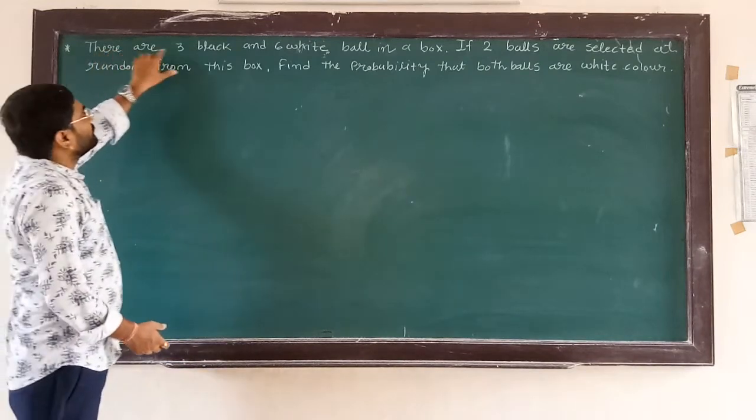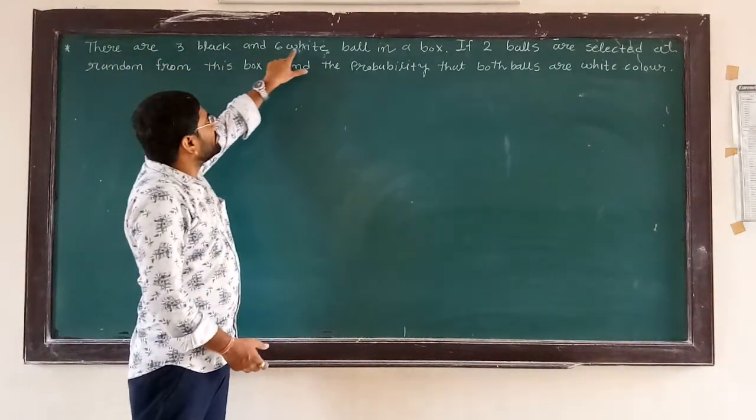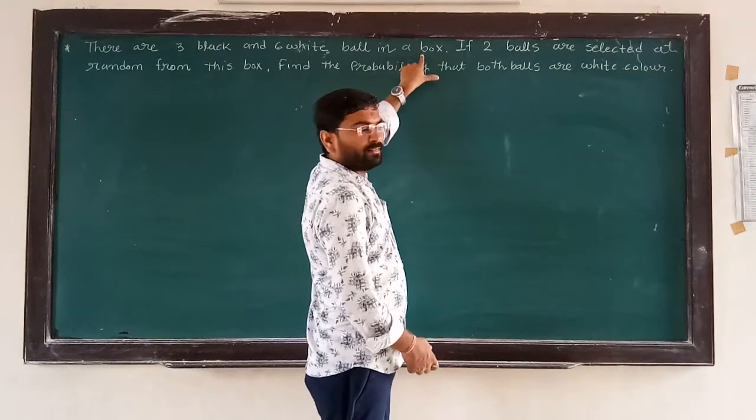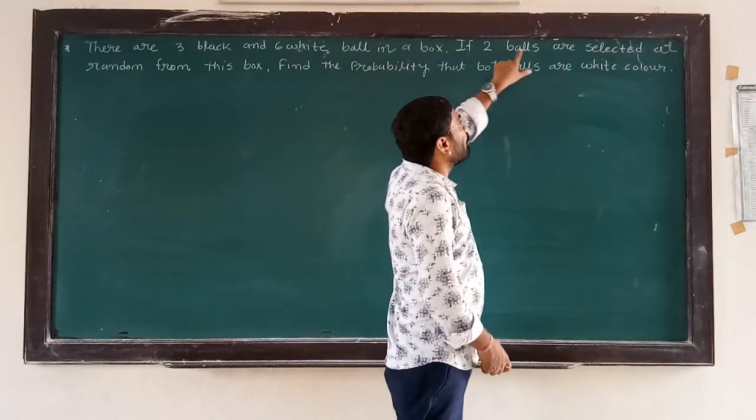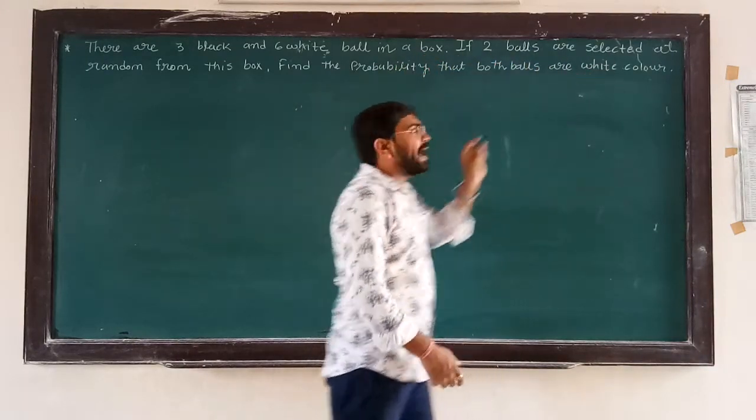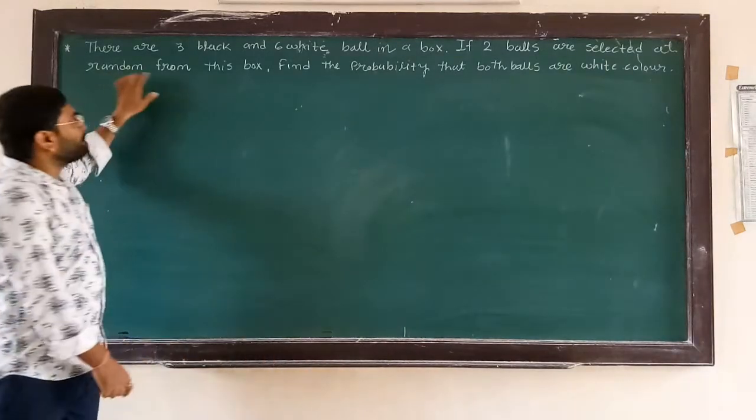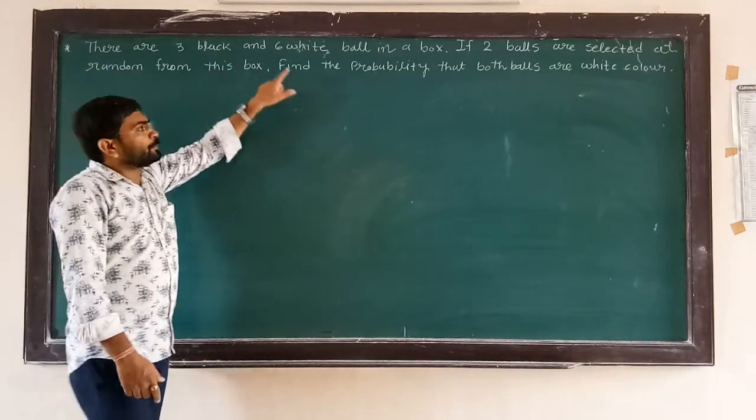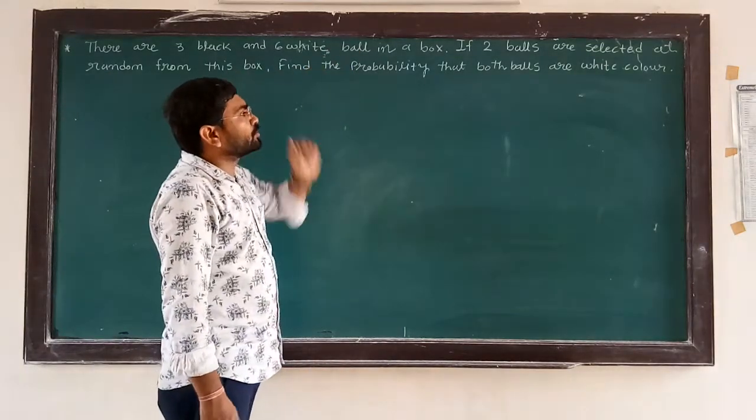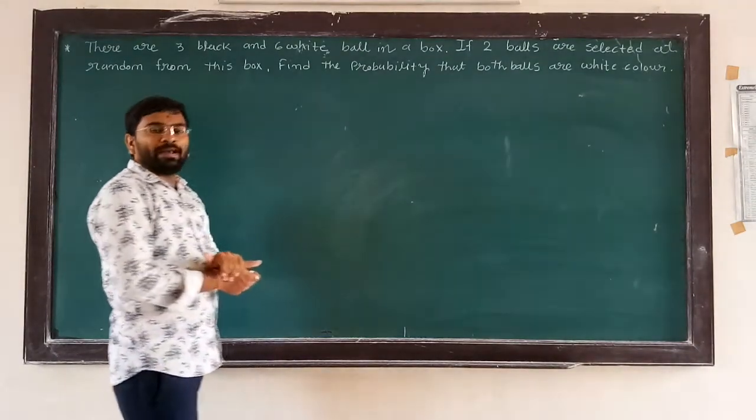There are 3 black and 6 white balls in a box. If 2 balls are selected at random from this box, find the probability that both balls are white color.